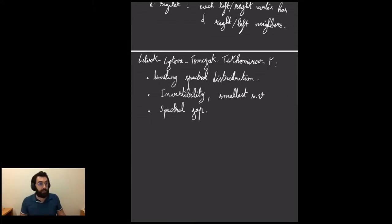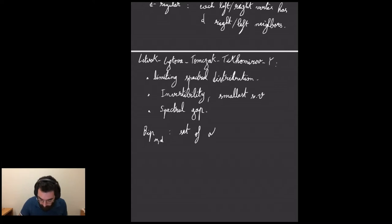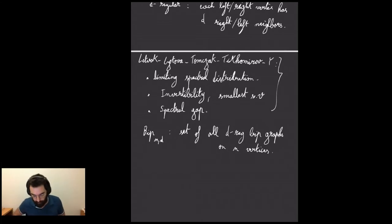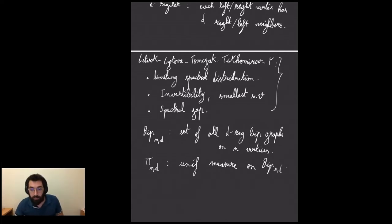Many statistics are well understood about these graphs, but the questions I'm going to ask today are more foundational. Let me set up one more notation: I'll denote B(n,d) as the set of all d-regular bipartite graphs on n vertices, and π(n,d) to be the uniform measure on this set.